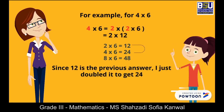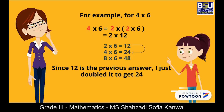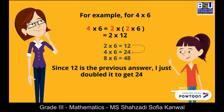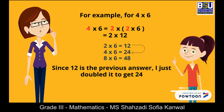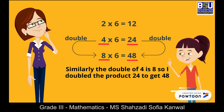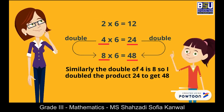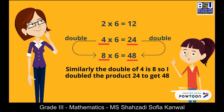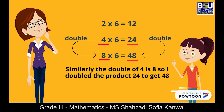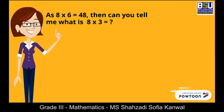Could you explain your answer? As four is two times two, we can see that four times six is the same as two times twelve. I just doubled twelve to get twenty-four. Similarly, the double of four is eight, so I doubled the product twenty-four to get forty-eight. That's a great strategy, Sarah — very smart!